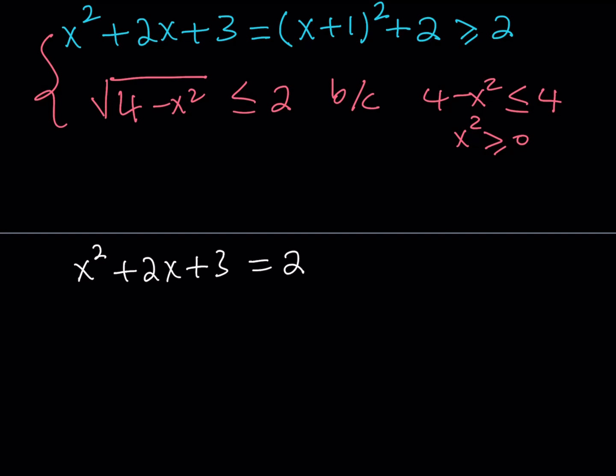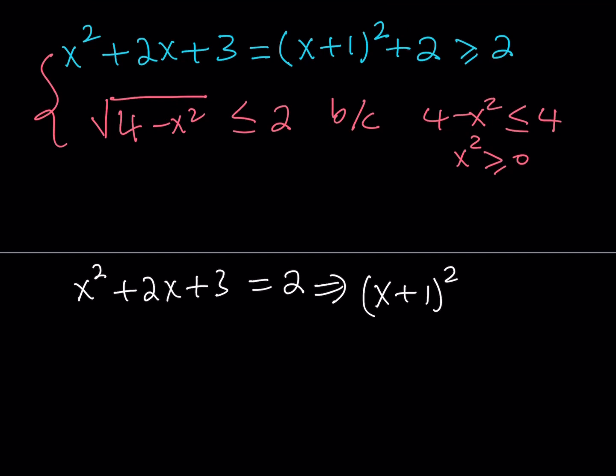Now from here, we're basically getting something like, if you go ahead and work this out, you're going to get, and we had this expression already, x plus 1 quantity squared from here plus 2. If that equals 2, that means the 2 cancels out and we end up with 0, which means that x needs to be negative 1. So from here, we get x equals negative 1.